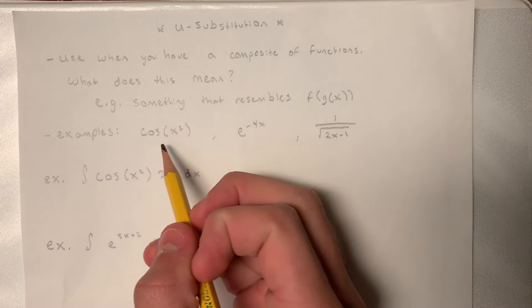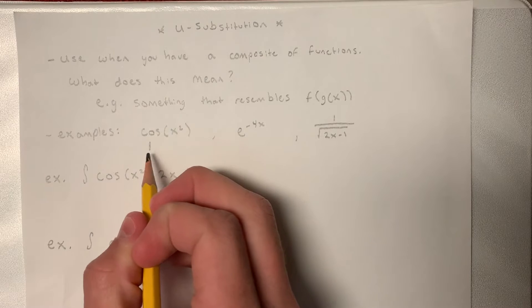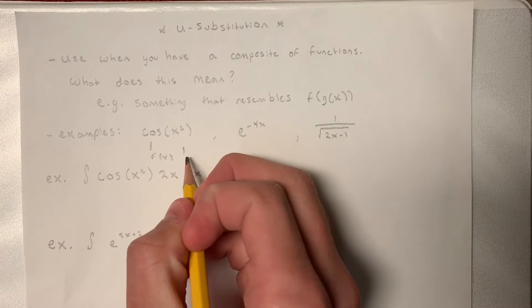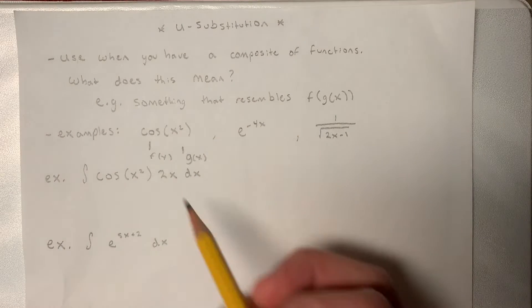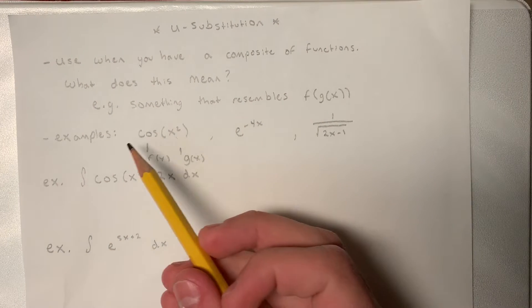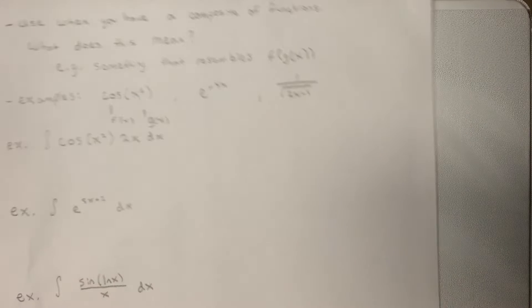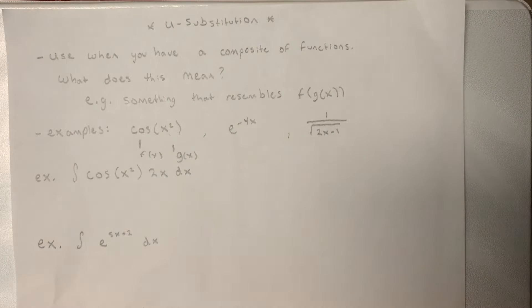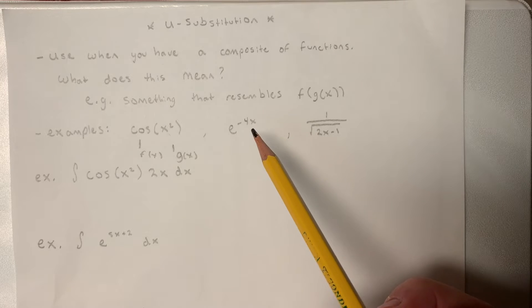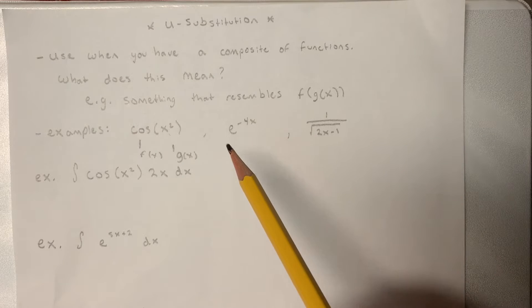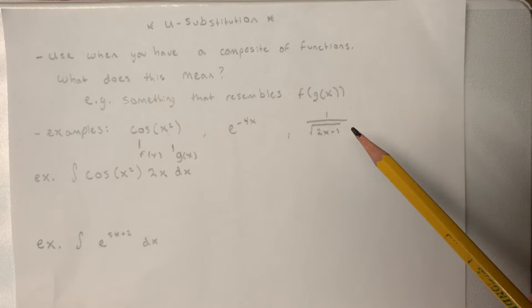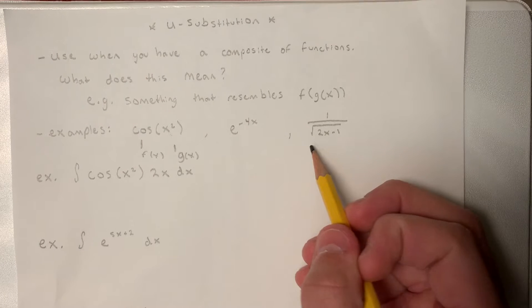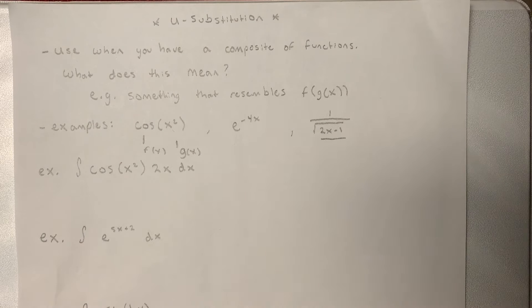An example would be cosine x squared, where your cosine is your f of x, and your x squared is your g of x. Your function x squared is within your cosine function. Another example would be e to the negative 4x. You have an independent function, negative 4x, within the power of e. And 1 over the square root of 2x minus 1. There's the function 2x minus 1 within the square root.